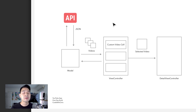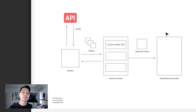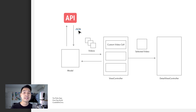When the user taps on one of those cells, we're going to pass that selected video over to a detail view controller where we're going to show the description of the video, a thumbnail of the video, and the user can tap on that thumbnail to play the video in that detail view controller. Don't be fooled by how simple it is, because a lot of the things you're going to learn from this app are applicable to apps of larger magnitudes. You're going to learn how to work with APIs, JSON, segues from one view controller to the next, and pass data between view controllers.